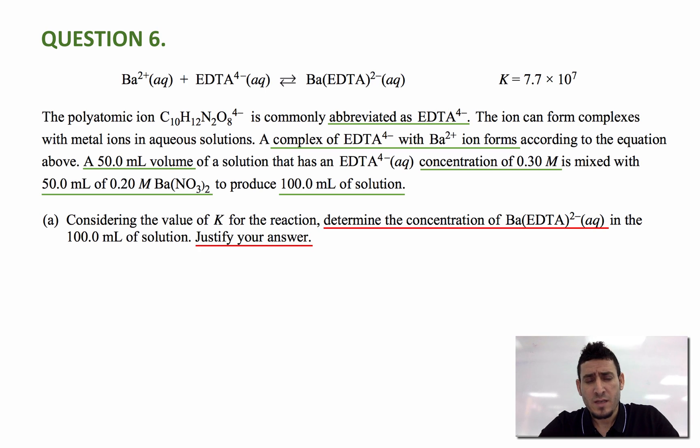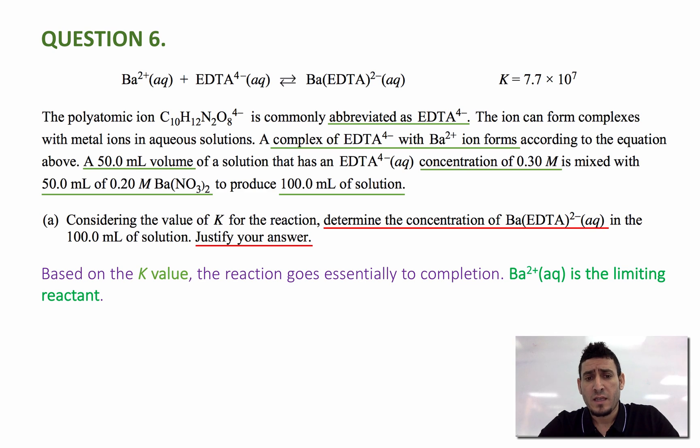Now the question says, considering the value of K. Based on the value of K, which is considered large, the reaction goes essentially to completion. So Ba 2+ is the limiting reactant.